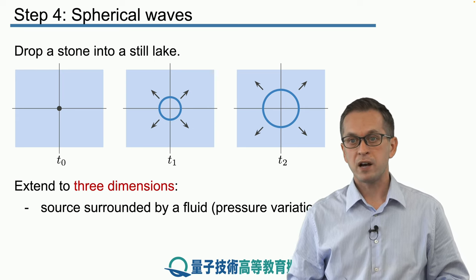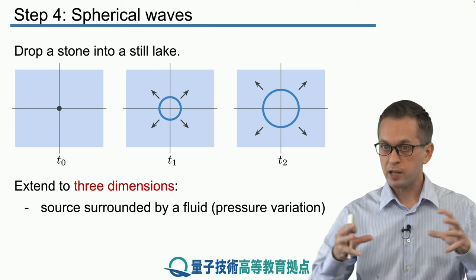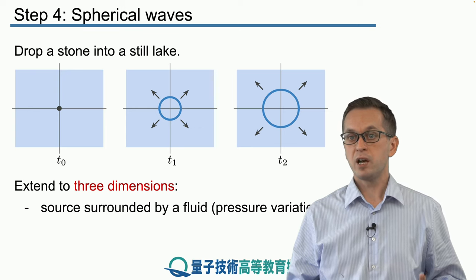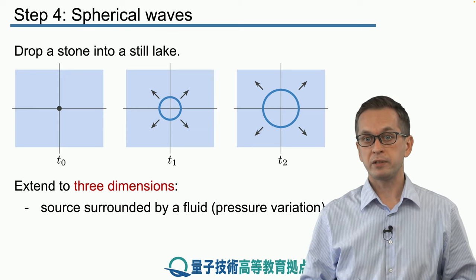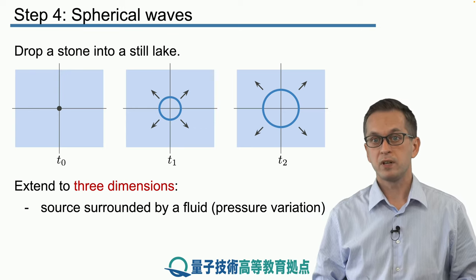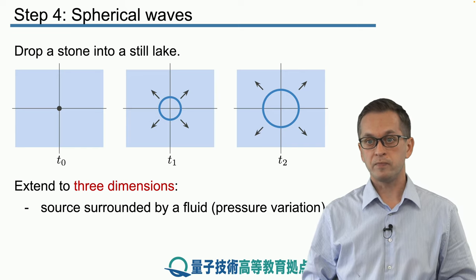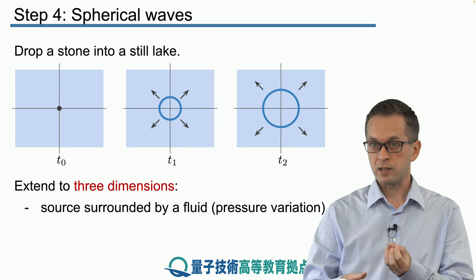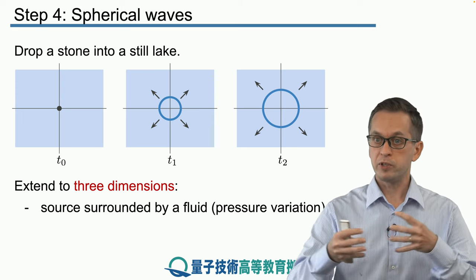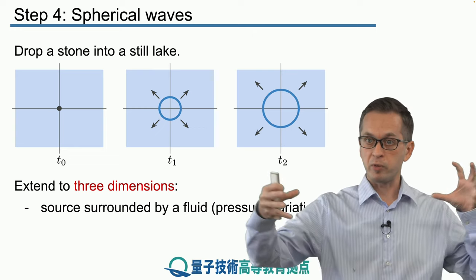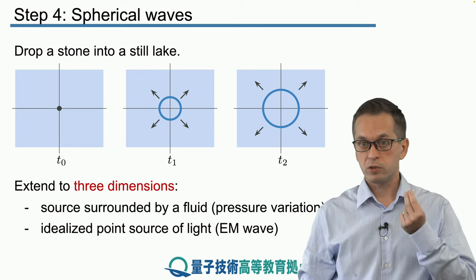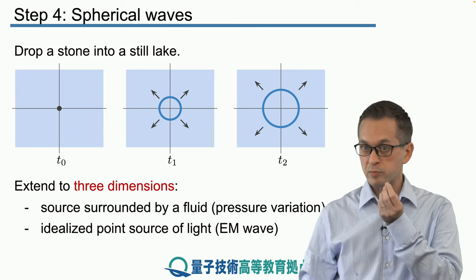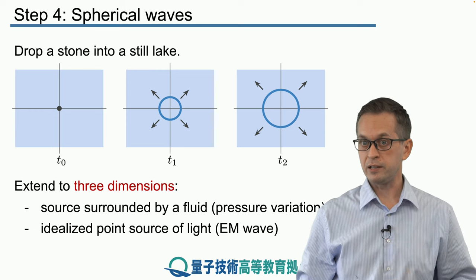Spherical waves are ideal in the sense that they propagate only radially outwards and are uniform on the surface of the sphere, but they are also very useful in practical applications. For example, a source of sound waves inside some fluid producing idealized spherical waves that propagate away from the source, or an idealized point source of light producing electromagnetic waves like a small antenna.